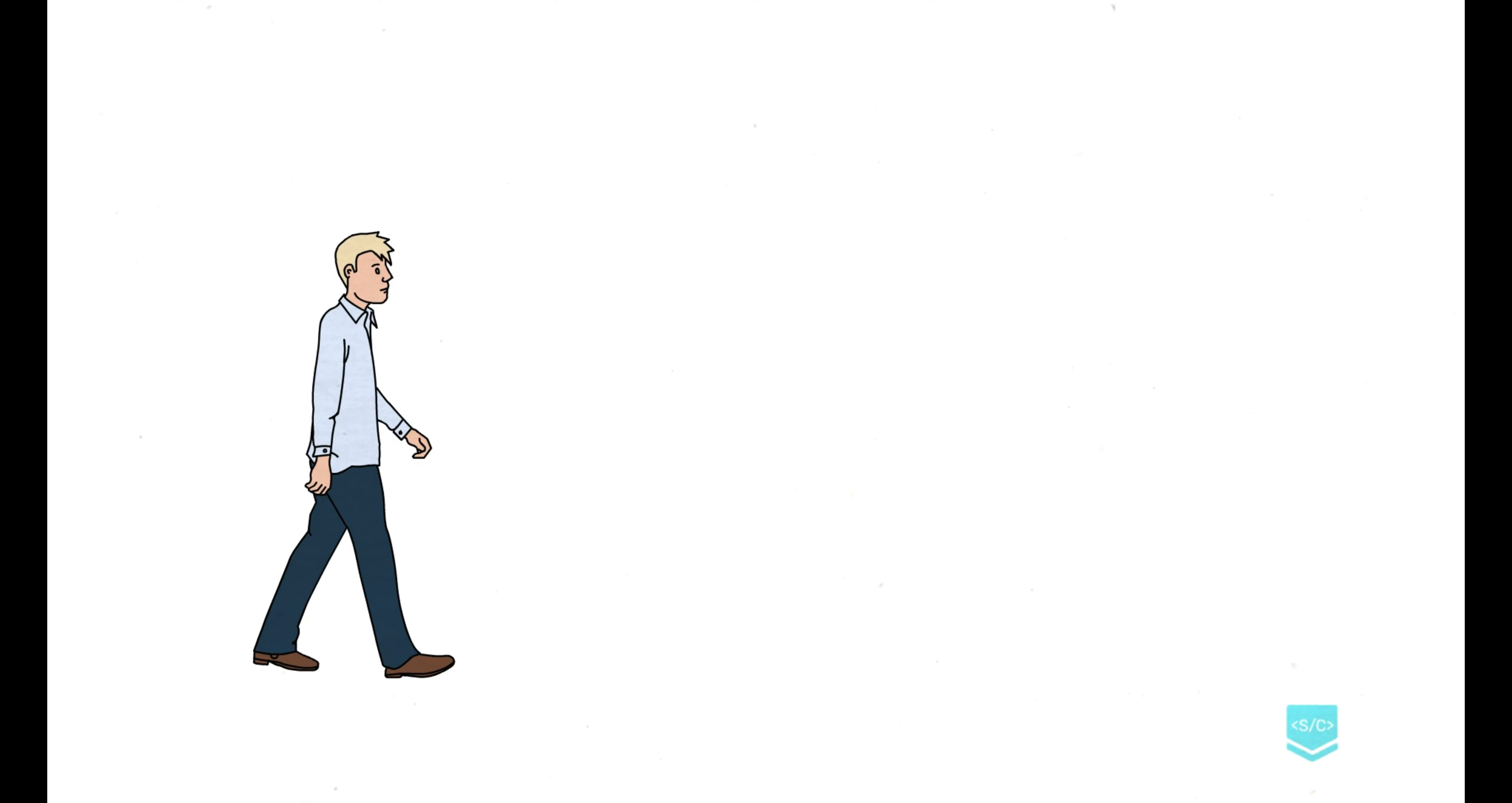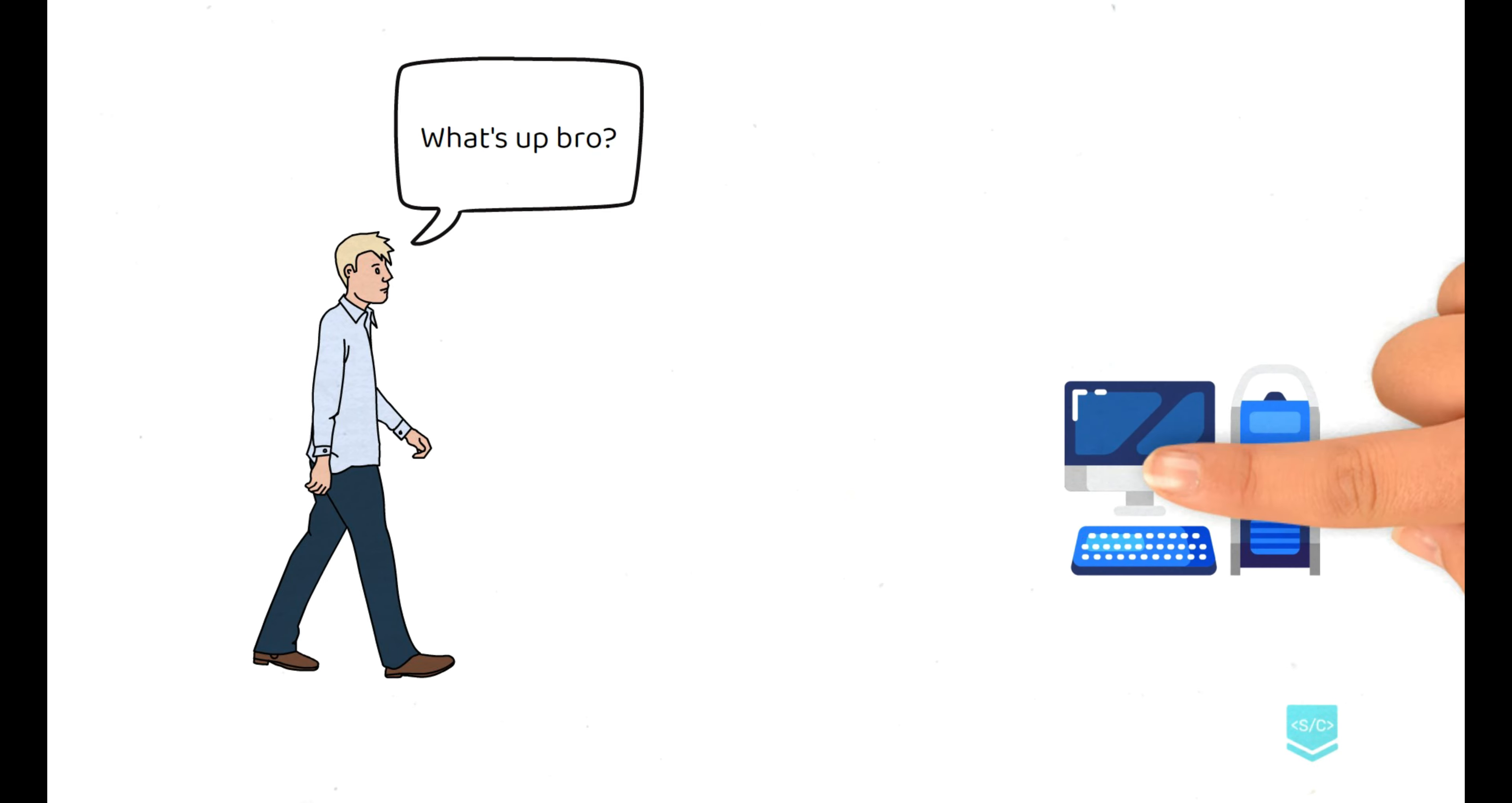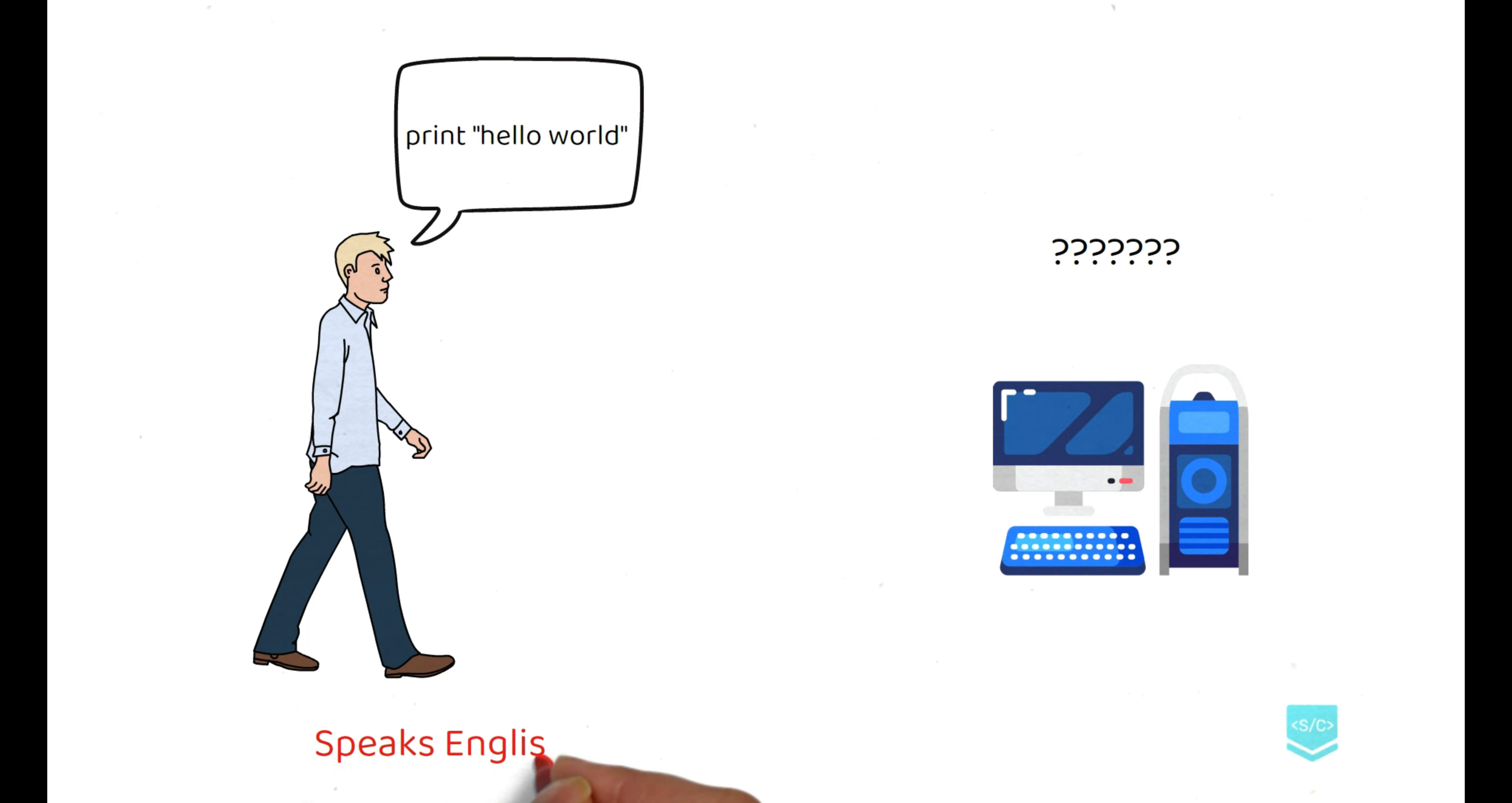When two people want to talk to each other, they use a language that both of them know. This is how humans communicate. But when it comes to computers, they understand binary language which only consists of ones and zeros. So when a human says print hello world, the computer is like, what? I don't understand what you want me to do, because these two are speaking two different languages.